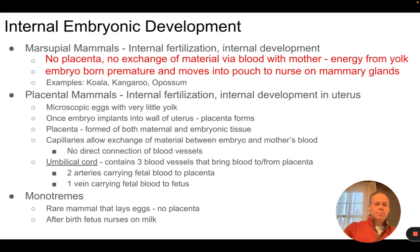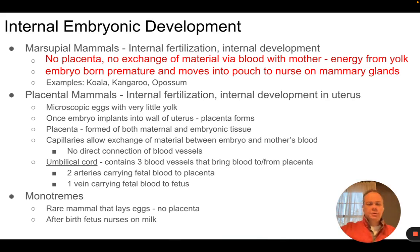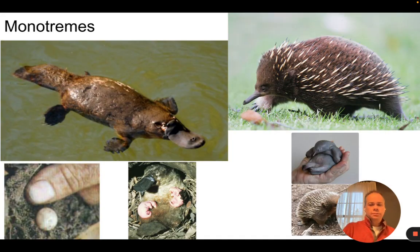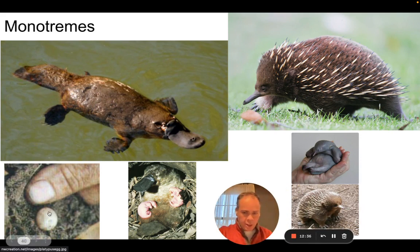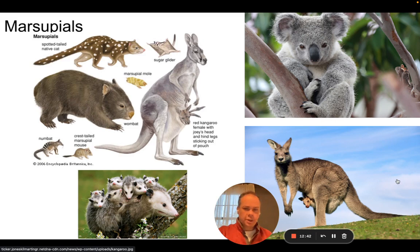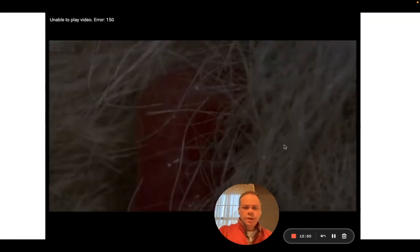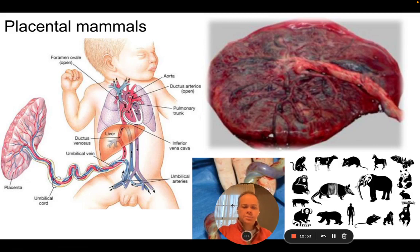The umbilical cord connects the fetus's blood supply to the placenta — it has two arteries carrying the fetus's blood to the placenta and one vein carrying blood back to the fetus. Images show what the placenta and umbilical cord actually look like — the placenta is an organ filled with blood vessels. Marsupials like the koala and kangaroo, and egg-laying monotremes like the echidna and platypus, represent the other mammalian reproductive strategies.